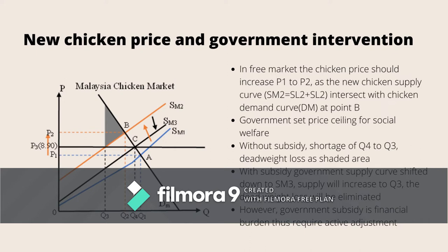However, for social welfare the government set a price ceiling at P3. Without government subsidy, there would be a shortage from Q3 to Q4 and a deadweight loss shown by the shaded area. Therefore, the government provided a subsidy to shift the chicken supply curve down to form equilibrium with market demand at the price ceiling, eliminating the shortage and deadweight loss.